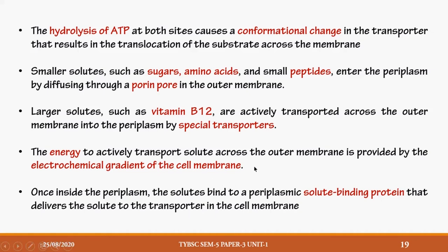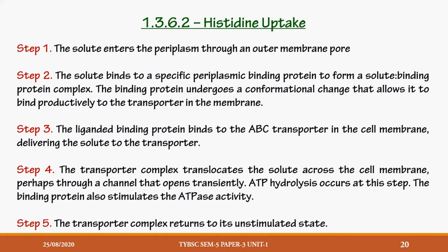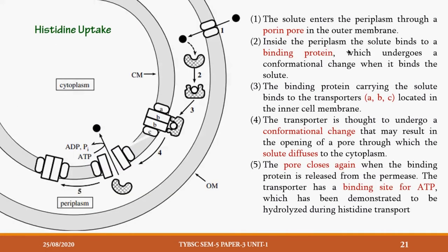For this particular slide, just take a screenshot for extra reading. We will directly discuss the diagram about histidine uptake. In the diagram, the outer membrane (OM) is marked at the top. Below it is the periplasm region, and then the inner cell membrane, which is the plasma membrane.